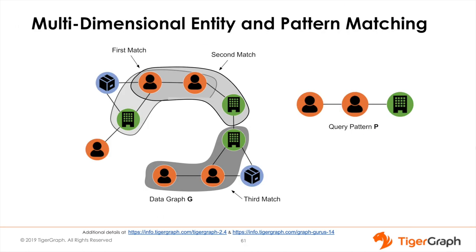Now let's look at pattern matching. A pattern is a set of interconnected entity and relationship types, usually with some meaning. A pattern might occur many times within a graph, and can be linear — meaning a chain of vertices — or non-linear, such as a tree, a circle, etc. The pattern can also contain multiple types of entities and relationships, so it is multi-dimensional.